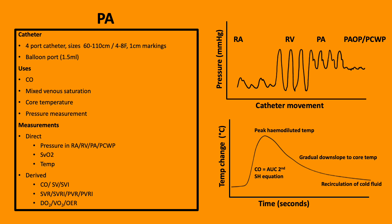The measurements which it can take can be direct or derived. The direct ones include the pressure of the right atrium, ventricle, pulmonary artery, and pulmonary capillary wedge pressure, in addition to the SvO2 and temperature. As shown, there's a range of derived measurements.